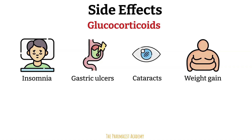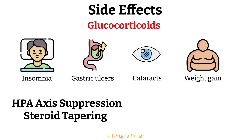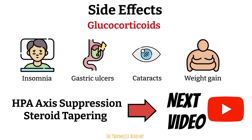Weight gain and fat redistribution are also very common, especially with chronic use, due to the ability to stimulate appetite and promote insulin resistance. Lastly, adrenal suppression or HPA axis suppression is a serious side effect of exogenous glucocorticoid therapy, especially when taken for long durations or at high doses. This will be covered in a separate video to explain the significance and why it is recommended to taper steroids.